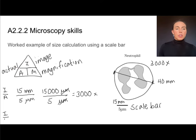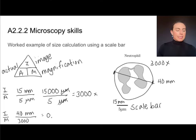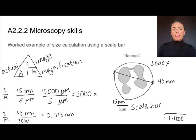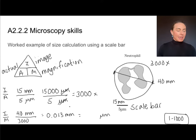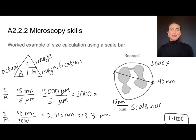To find actual size, I take the size of the image and divide it by the magnification. The size of my image, measured with my ruler, is 40 millimeters, and the magnification we calculated is 3000 times. That gives me 0.013 repeating millimeters. It's worth noting your numerical answers should always be between 1 and 1000 — if not, you need to convert units. Converting to micrometers (there are 1000 micrometers per millimeter), I get about 13.3 repeating micrometers. This is a great example of using the magnification triangle and scale bars to find actual sizes of objects.